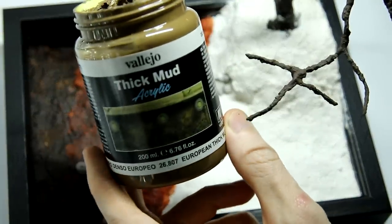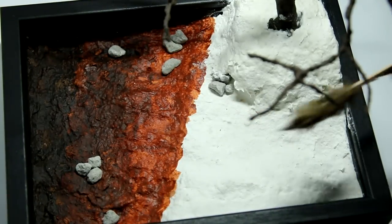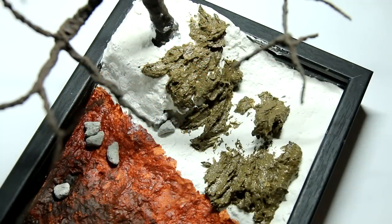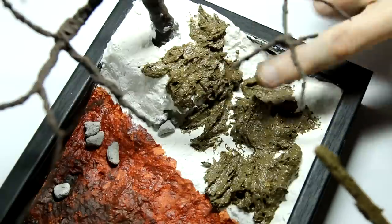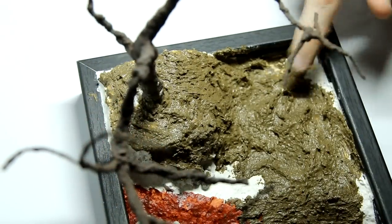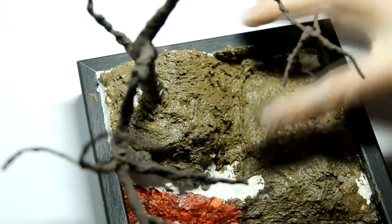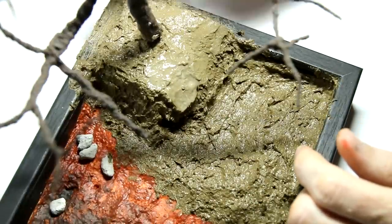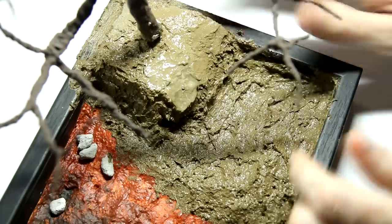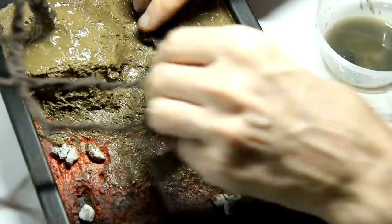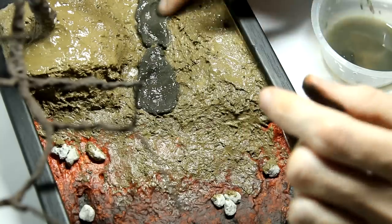Vallejo Acrylic Mud is the product I'm going to use for the road. This is European Earth. Then to break up the uniformity, I'm using some thick Russian mud, also from Vallejo, just to mix in, especially in the road area which has been churned up by vehicles.